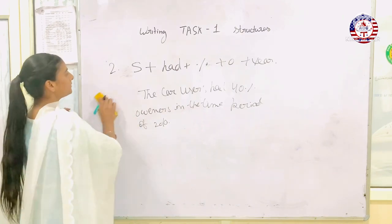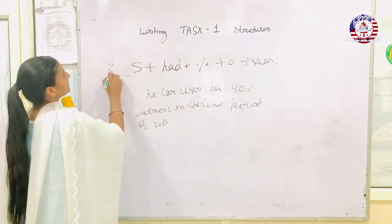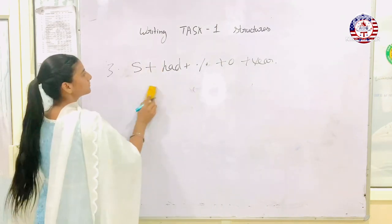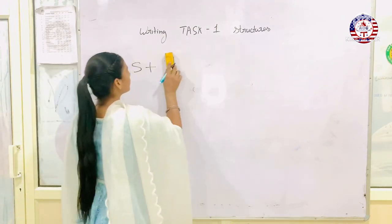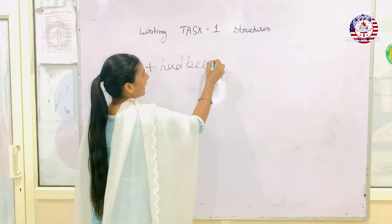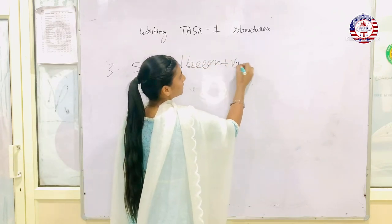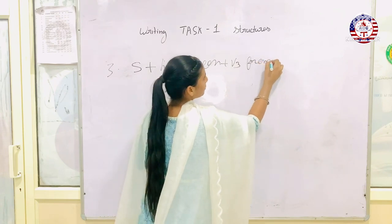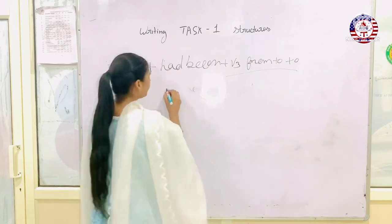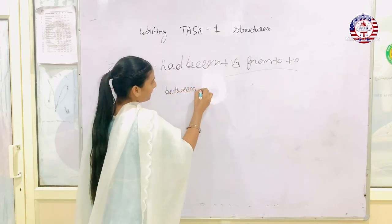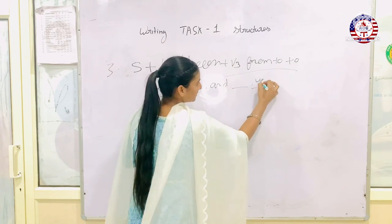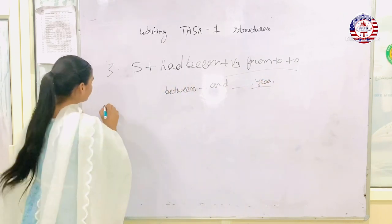The fourth structure is had been plus verb in third form, from to, plus object. We use between with dash and dash, then year. For example...